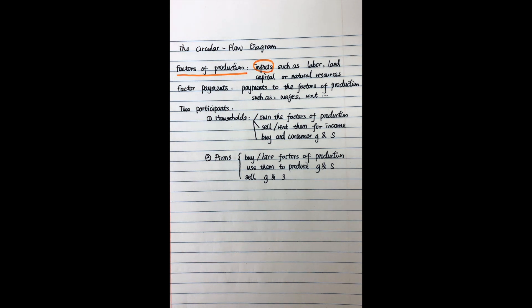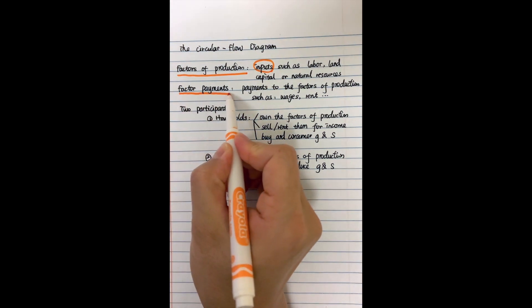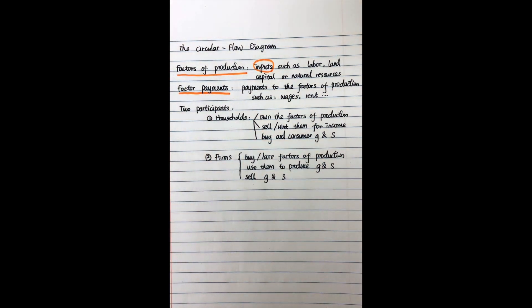Another concept is factor payments. Factor payments means the payments to the factors of production. For example, if you offer your labor and work in the market, then your employer needs to pay your wages. If you rent your house, then you can also receive rent. Those we call factor payments.